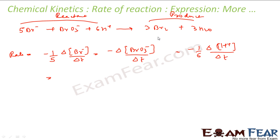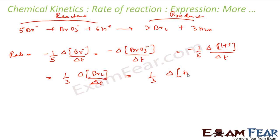This will always be equal to, for the product side, 1 by 3 because the coefficient is 3, times the change in concentration of Br₂ by ΔT. There is no negative sign here because this is a product. This equals 1 by 3 times the change in concentration of water by ΔT. The rate of reaction can be denoted by any one of these expressions — they are all equal.